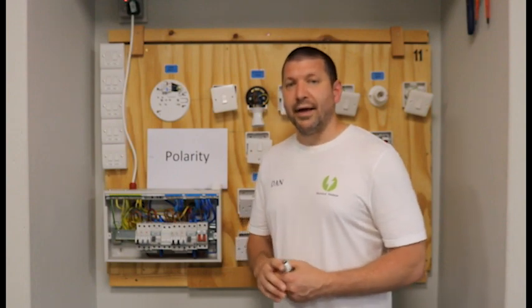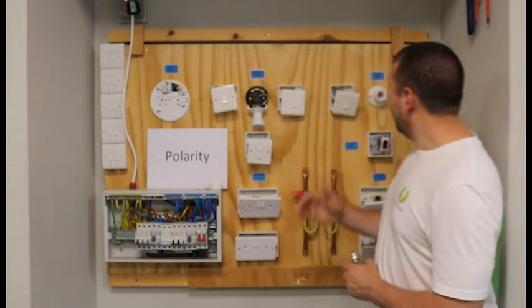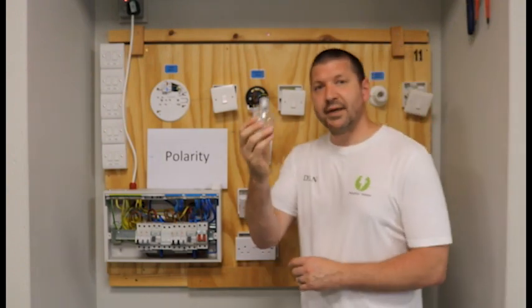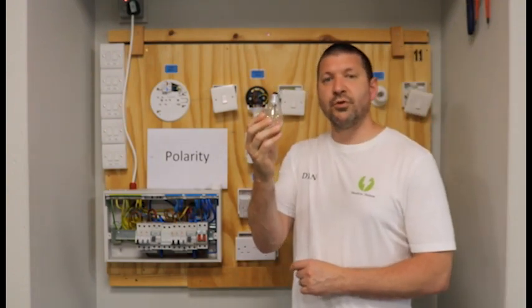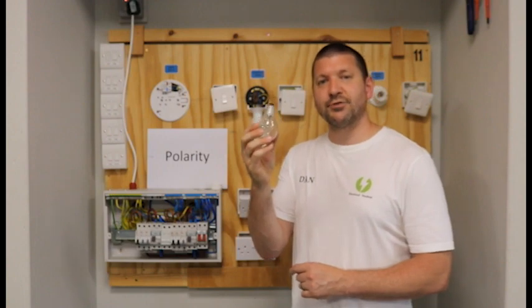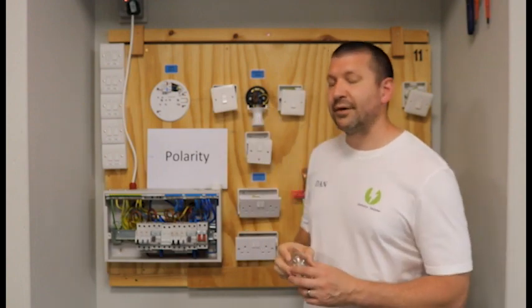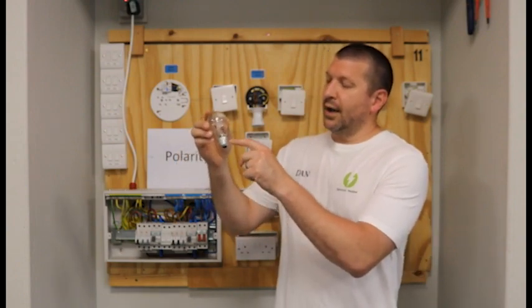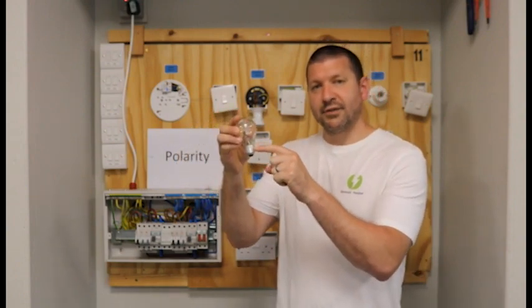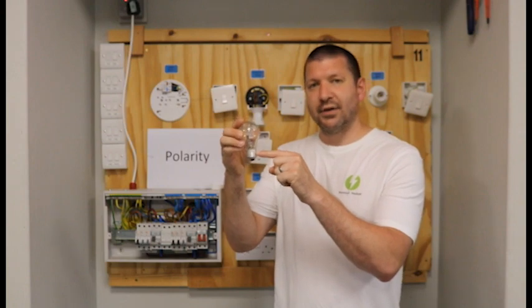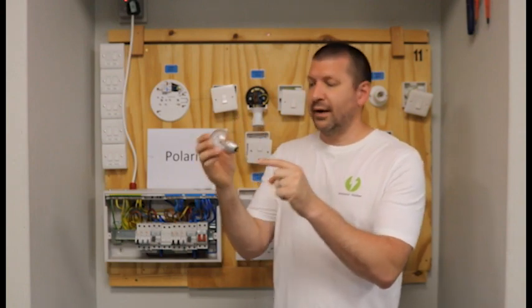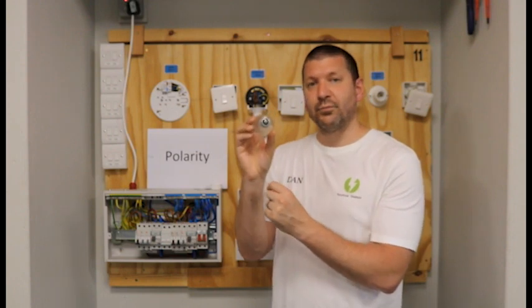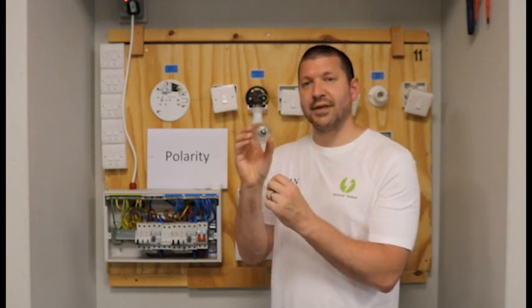Polarity test B is very specific to this type of lamp holder. These old school screw lamps, the ES, Edison screw lamps. Polarity test B ensures that we have got the outer connector, this thread connection is to the neutral and the centre pin contact is to the live. We must ensure that, that's polarity test B.